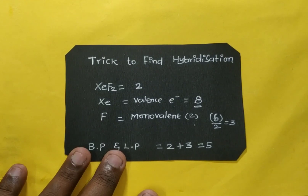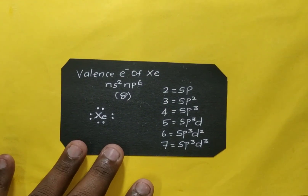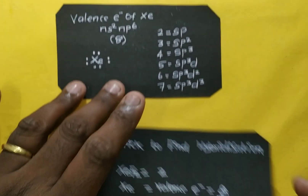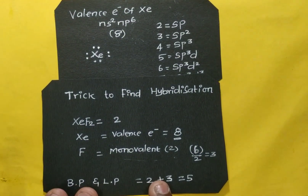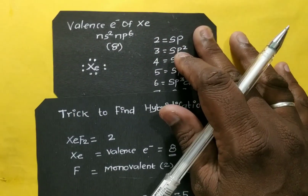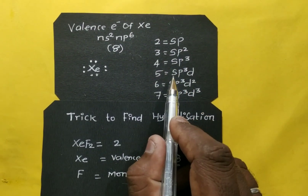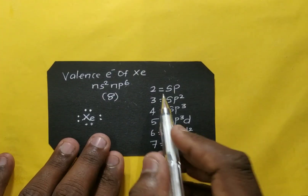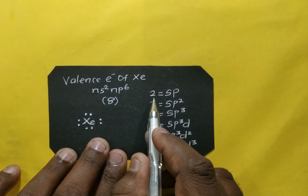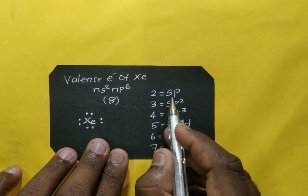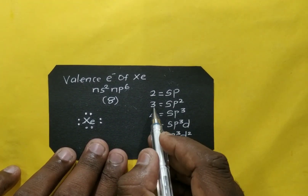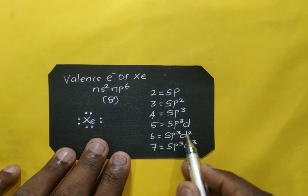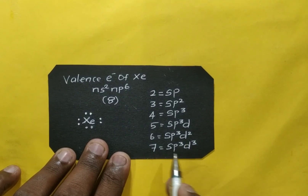The hybridization trick: if bond pair plus lone pair equals 2, hybridization is sp; if 3, sp²; if 4, sp³; if 5, sp³d; if 6, sp³d²; if 7, sp³d³. This allows us to calculate hybridization very easily.